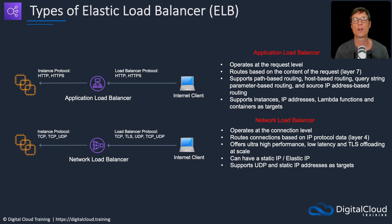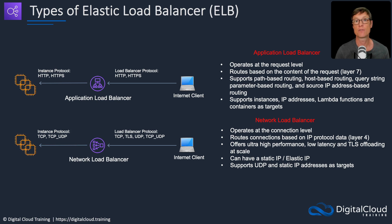Next we have the network load balancer, the NLB. This operates at the connection level, around layer four, using IP protocol data to make routing decisions. The NLB listens on TCP, TLS, UDP, and TCP_UDP. Both the ALB and the NLB are the newer generation of load balancers. The NLB is really good for when you need ultra high performance and extremely low latency, or if you need TLS offloading at scale, processing encryption for TLS connections and offloading that from your back-end instances. So if you see exam questions asking for a very low latency load balancer, it's likely to be the NLB.